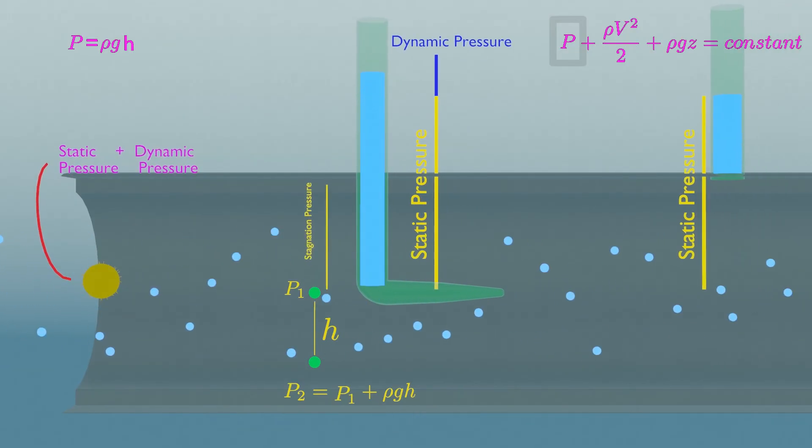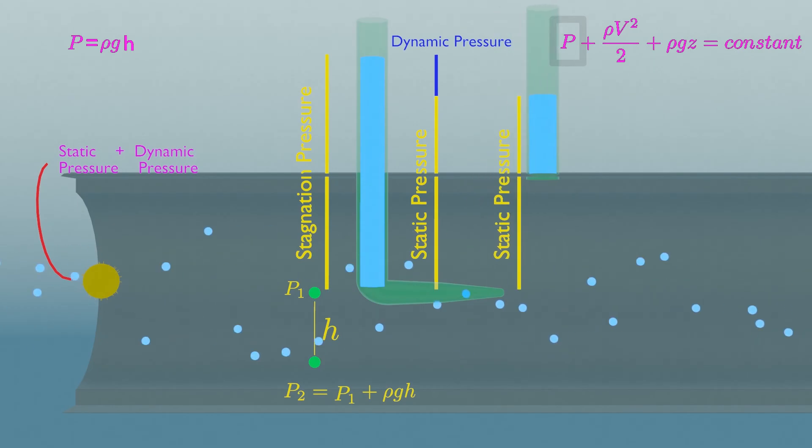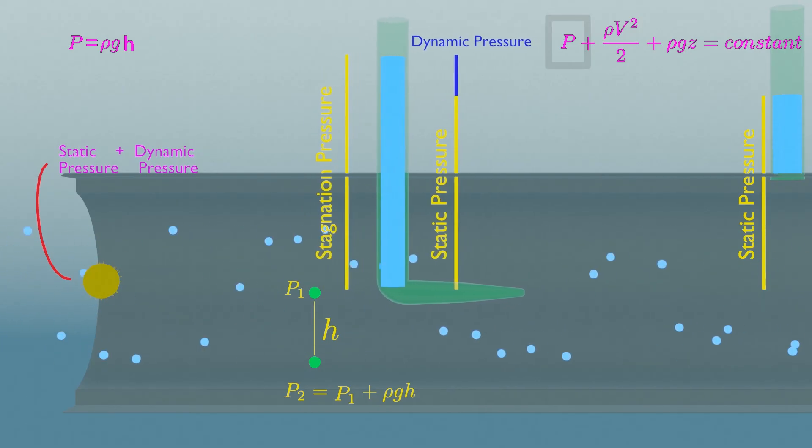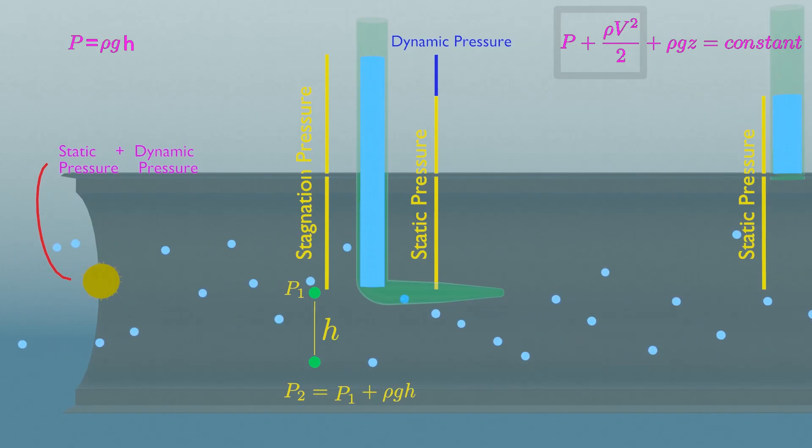That's why a piezometer tube is measured perpendicular to flow, so that it cannot disturb fluid velocity and be able to measure static pressure only. Whereas pitot tube is fitted parallel to flow, so that it can experience stagnation pressure.